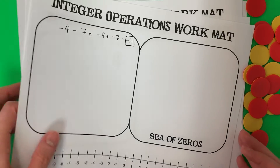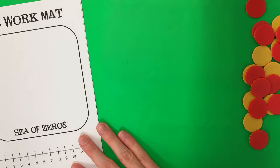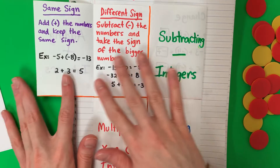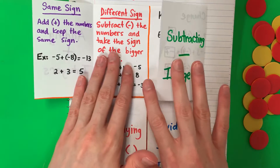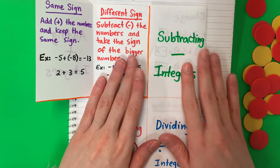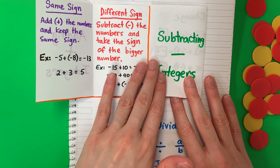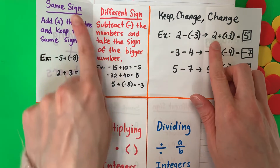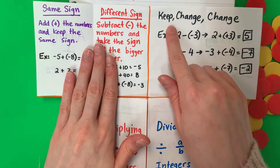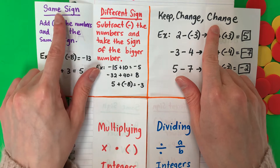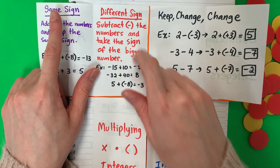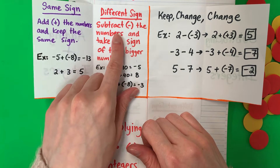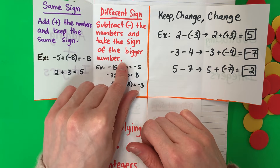Let's go ahead and do this mathematically now. I'm going to show you my foldable. In our last video, we already discussed the adding integer rules. But first, let's look at the subtracting rules. For subtracting, you do keep, change, change. Then after keep, change, change, you decide if the signs are the same or different. Same sign: add the numbers and keep the same sign. Different sign: subtract the numbers and take the sign of the bigger number.